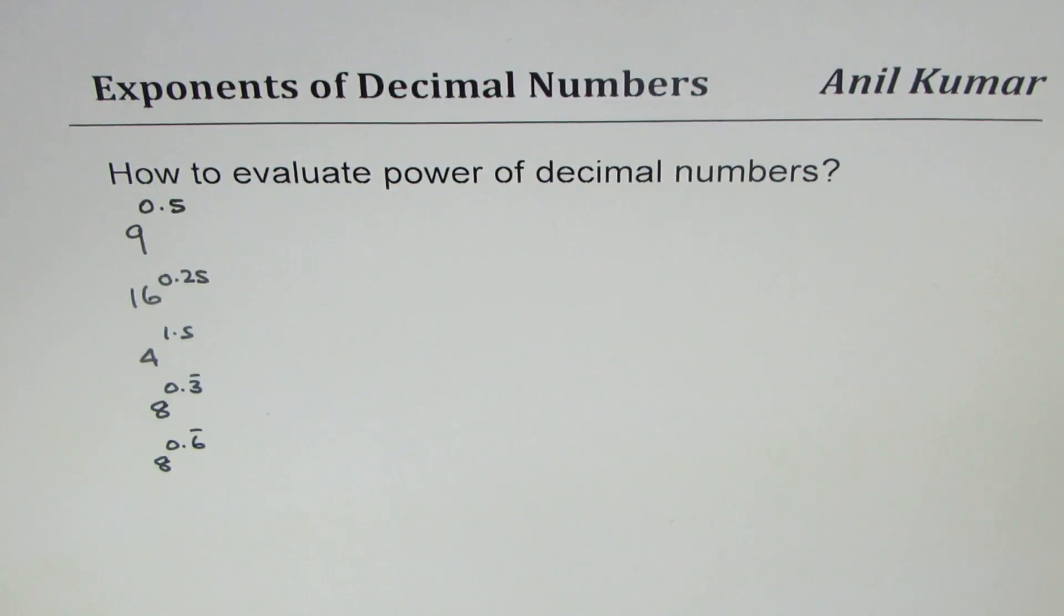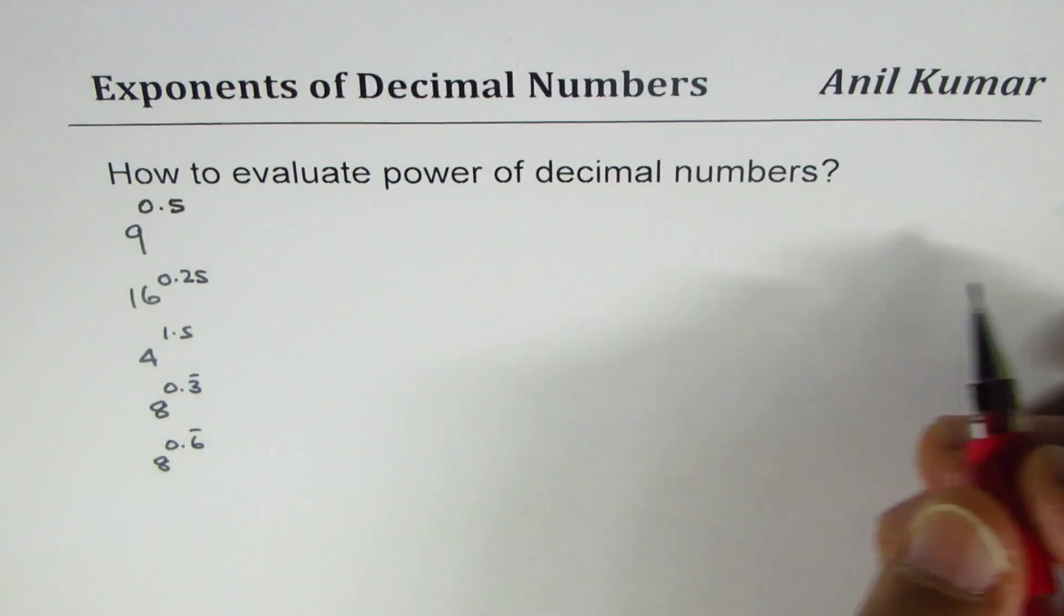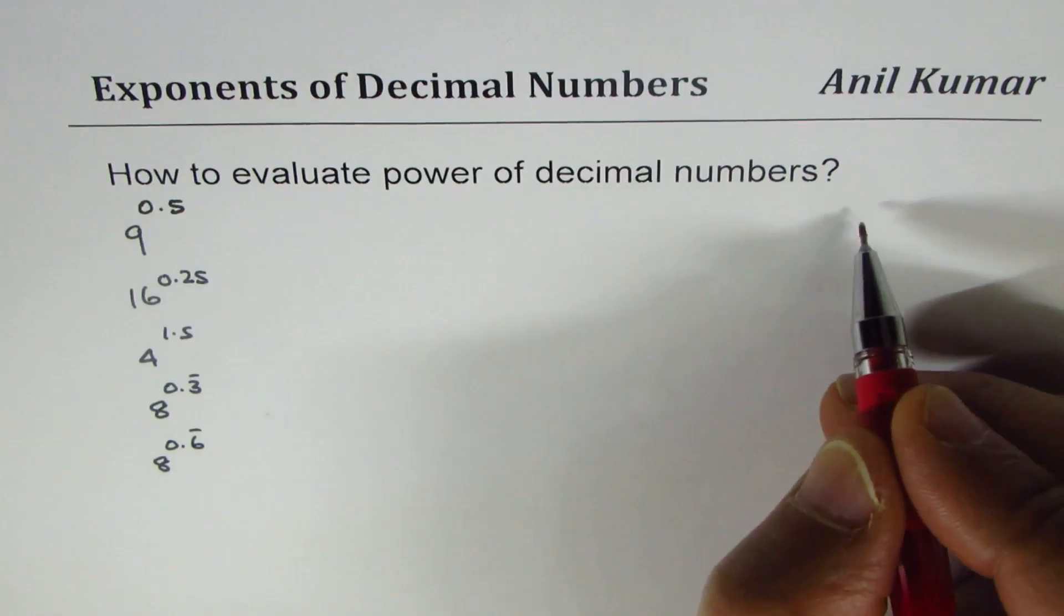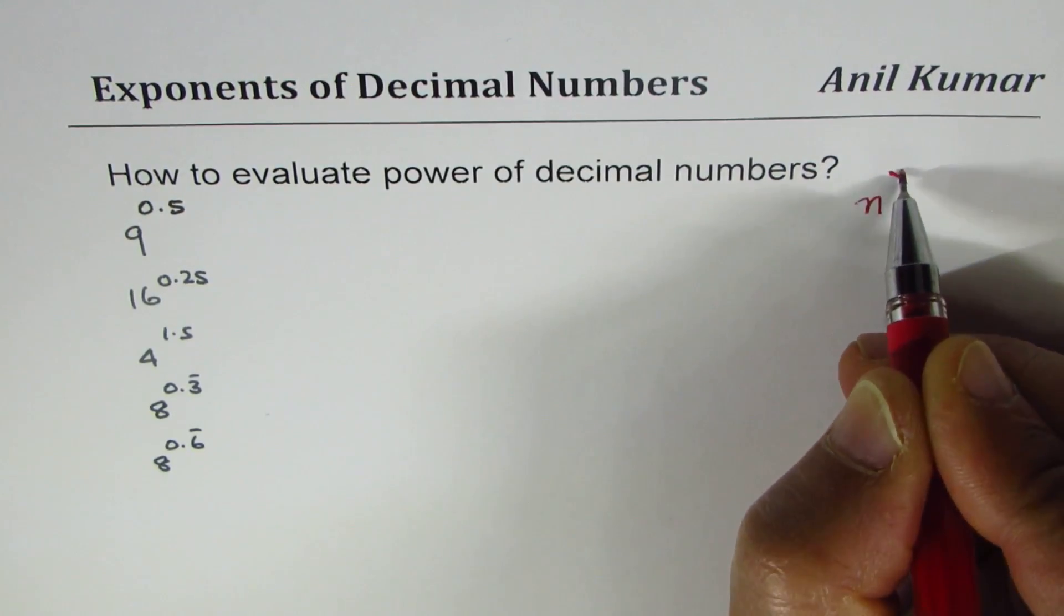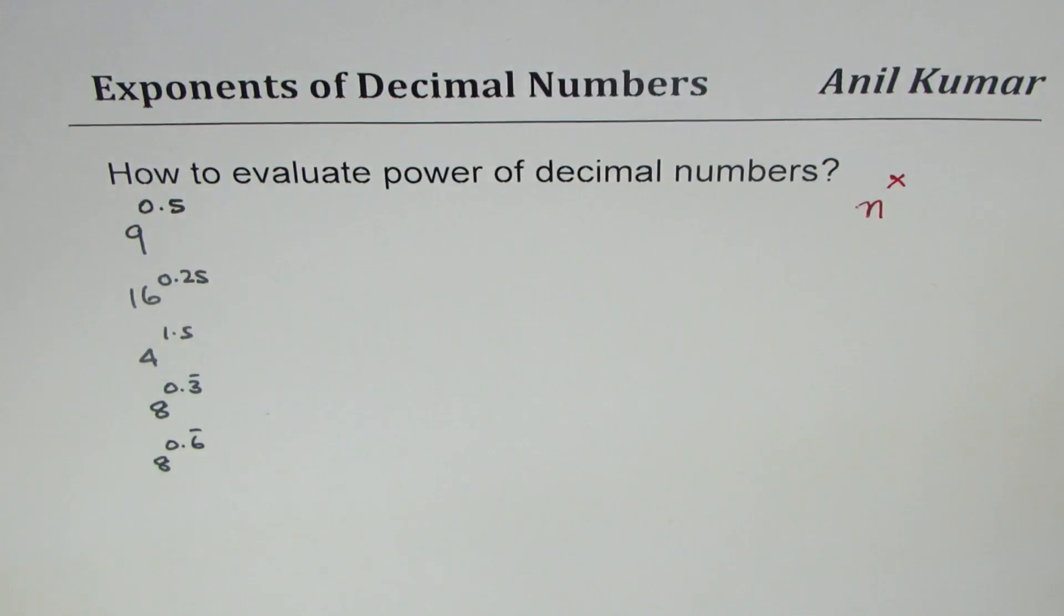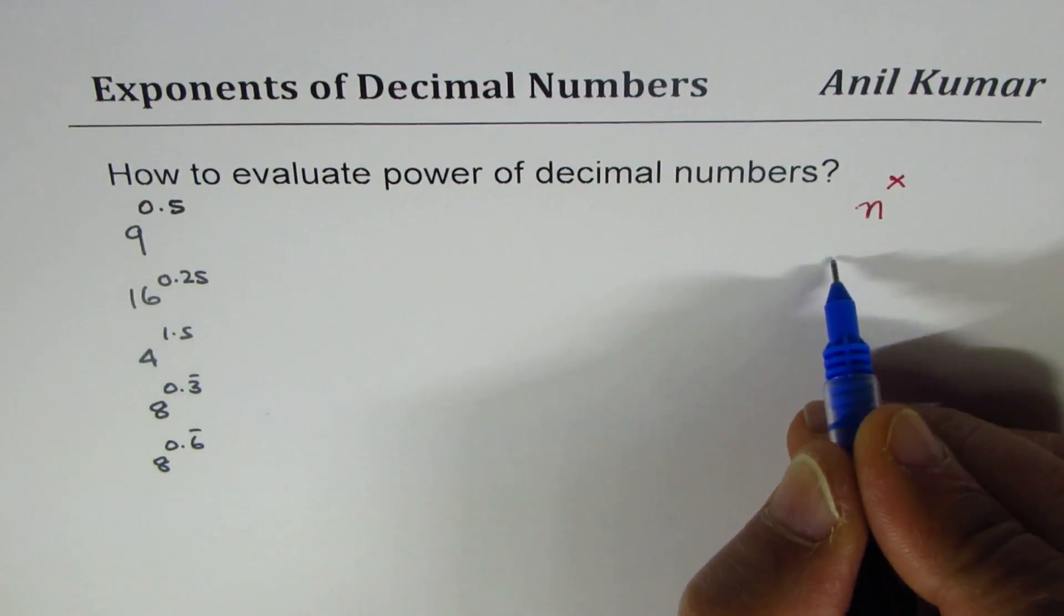Let me give you some background here. Generally when we have a number as n to the power of x, the number n is called the base, so we say it is a base to the power of exponent.